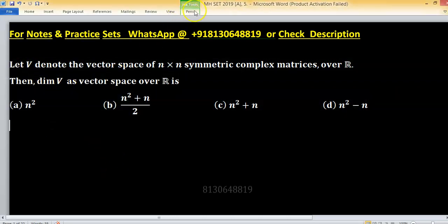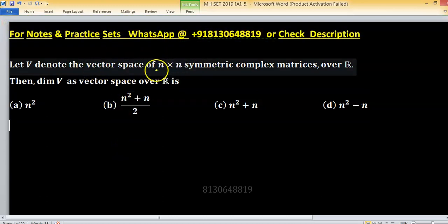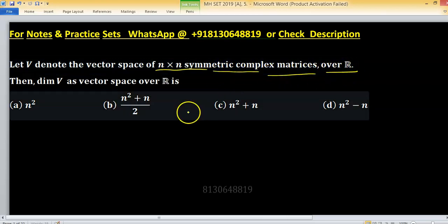In this problem, V is a vector space denotes n cross n symmetric vector space of n cross n symmetric complex matrices over R.